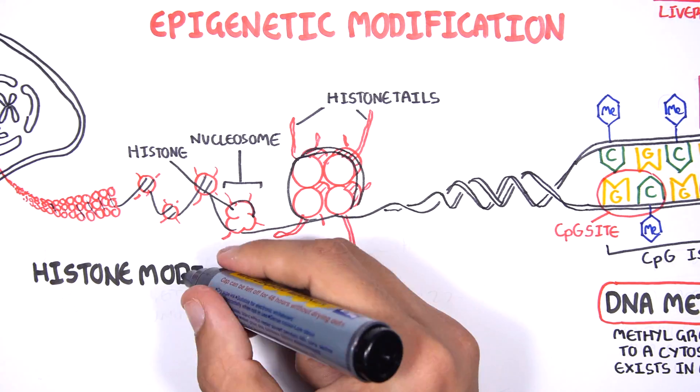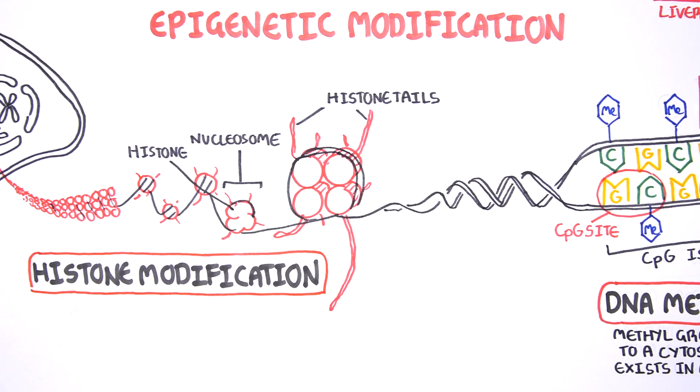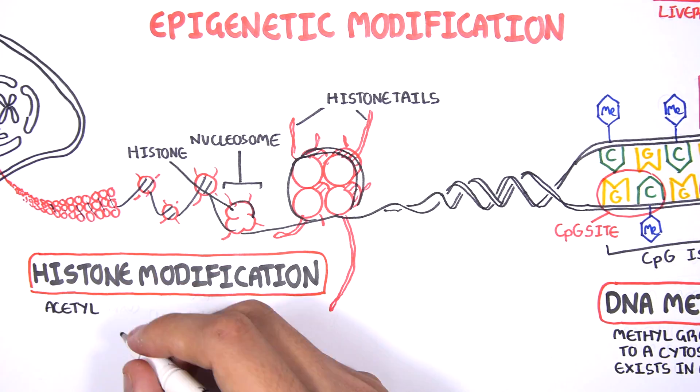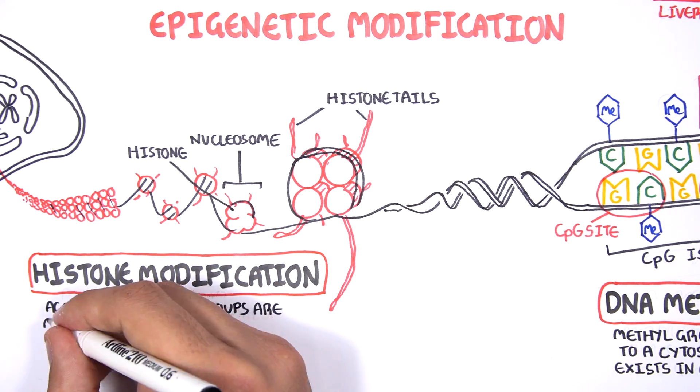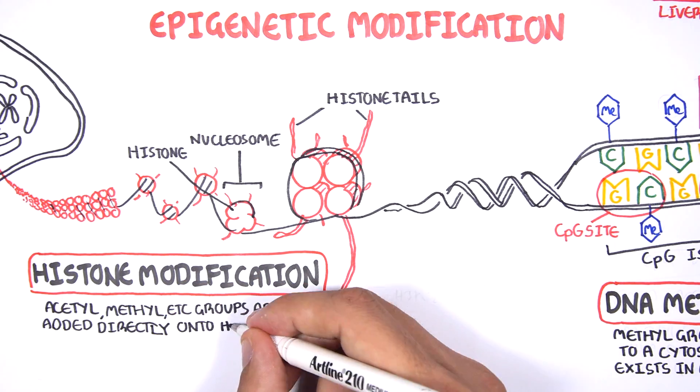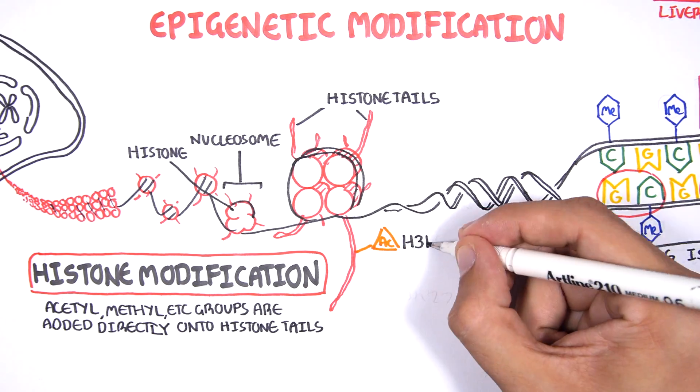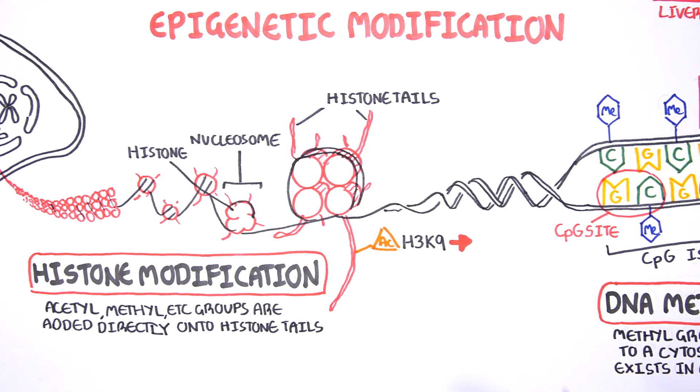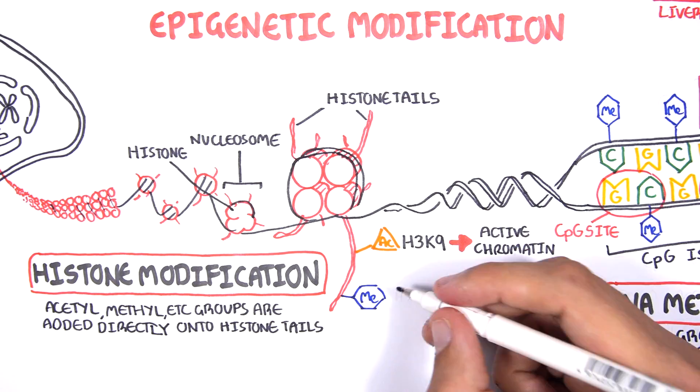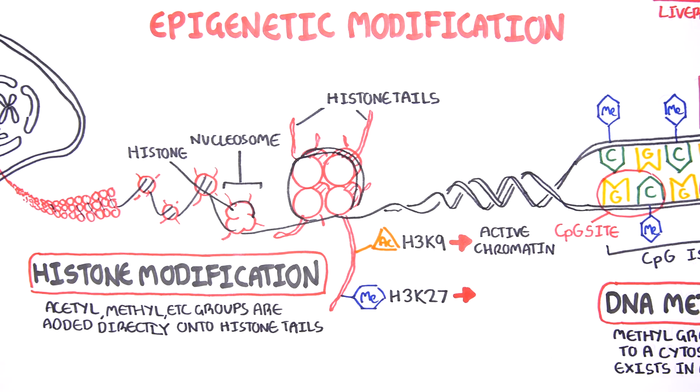The second type of epigenetic modification is histone modifications. This is where acetyl or methyl groups are directly added onto histone tails, and this will modify gene expression. For example, histone 3K9 acetylation correlates with transcription activation, and histone 3K27 trimethylation with transcription repression.